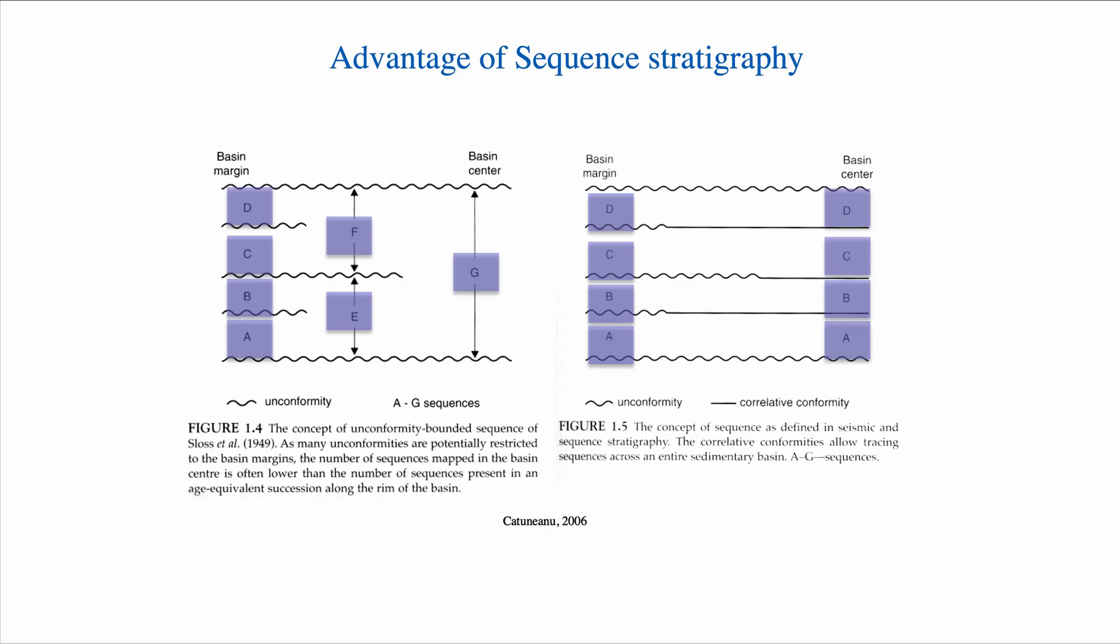So that means that by using this notion we can see that we have four sequence stratigraphic units on the basin margin, and also four sequence stratigraphic units on the basin center. So that means that sequence stratigraphic units are actually superior in terms of being able to trace or to correlate sediment packages from the basin margin to the basin center.